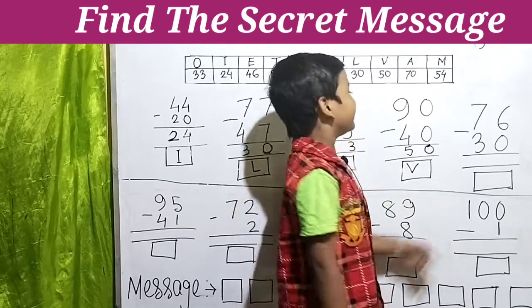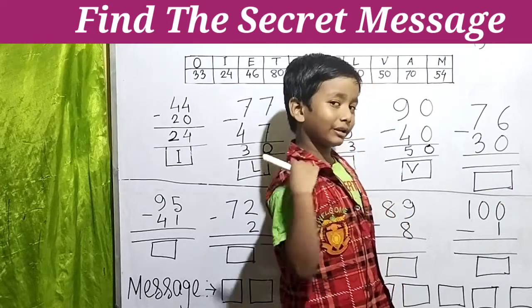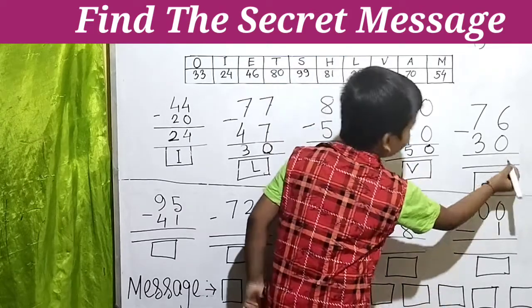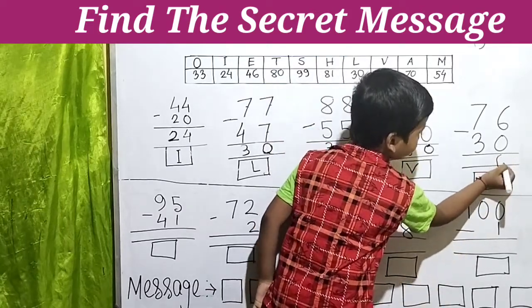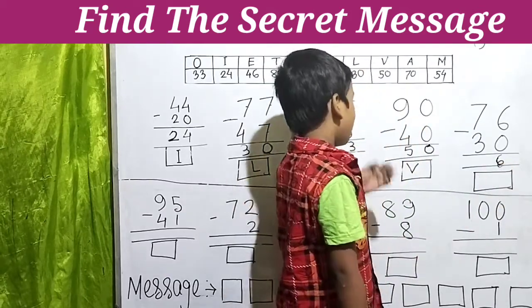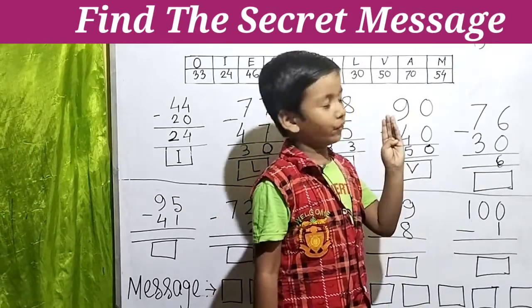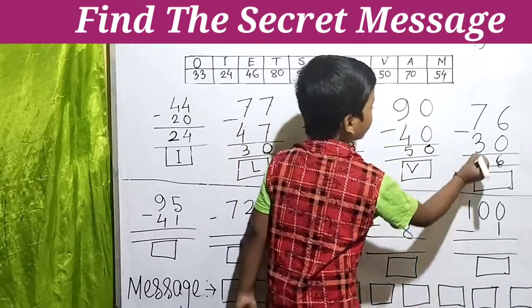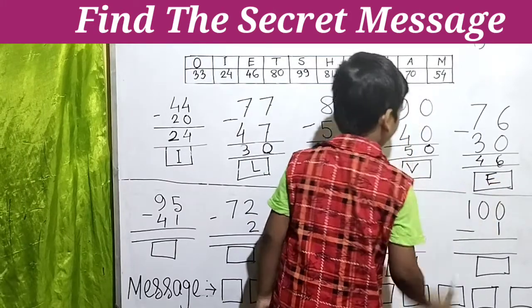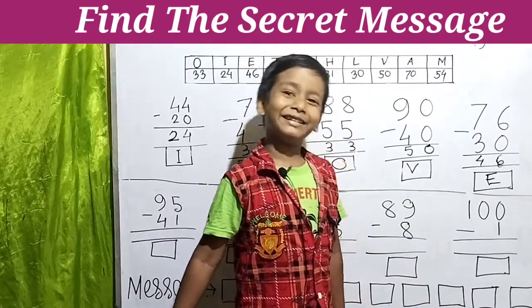Next is 76 minus 30. 6 minus 0 equals 6 — we don't have to count, because 6 minus nothing equals 6. Then 7 minus 3 — counting: 4, 5, 6, 7 — that's 4. So 76 minus 30 equals 46, and 46 means E. The fifth letter of the message is E.